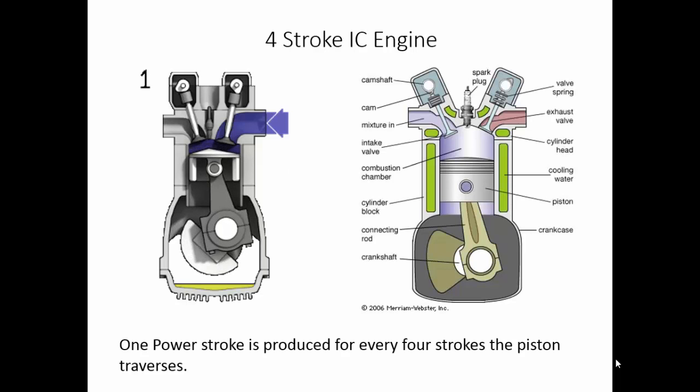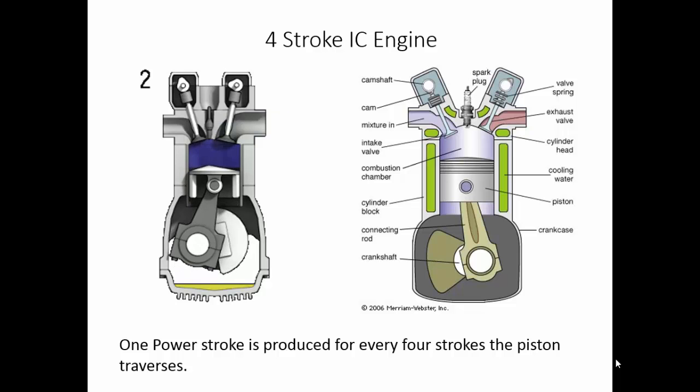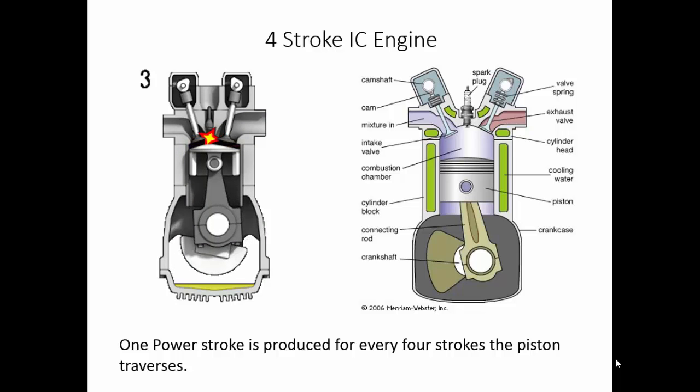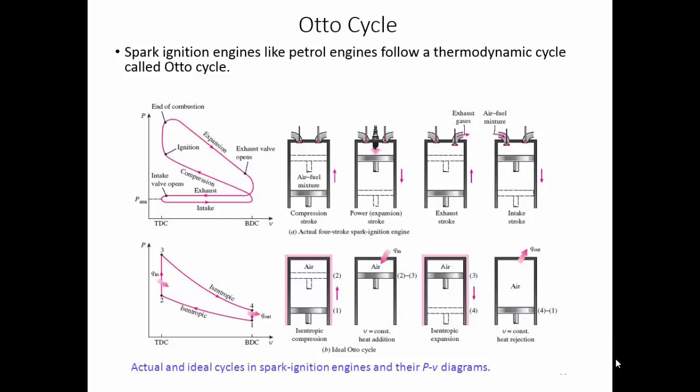We'll be studying the Otto cycle in four-stroke petrol engines. Since you have already covered the four different strokes in a petrol engine, we now need to understand the thermodynamic variations — that is, pressure, volume, and temperature changes inside the cylinder. A quick recap: a four-stroke engine produces one power stroke for every four strokes of the piston, with the strokes being suction, compression, power, and exhaust.